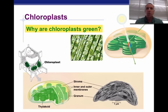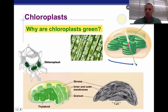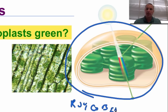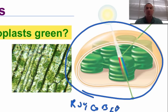Why are they green? The light spectrum is made up of ROYGBIV — red, orange, yellow, green, blue, indigo, and violet. Chloroplasts are green because they absorb all the colors of the light spectrum except for green. Green is reflected.